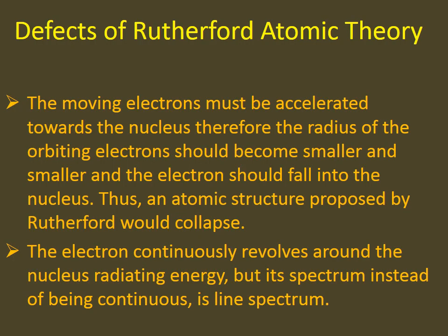In a nutshell, the moving electrons must be accelerated towards the nucleus. Therefore, the radius of the orbiting electrons should become smaller and smaller, and the electron should fall into the nucleus. Thus, the atomic structure proposed by Rutherford would collapse, so it does not give any information about the stability of an atom.